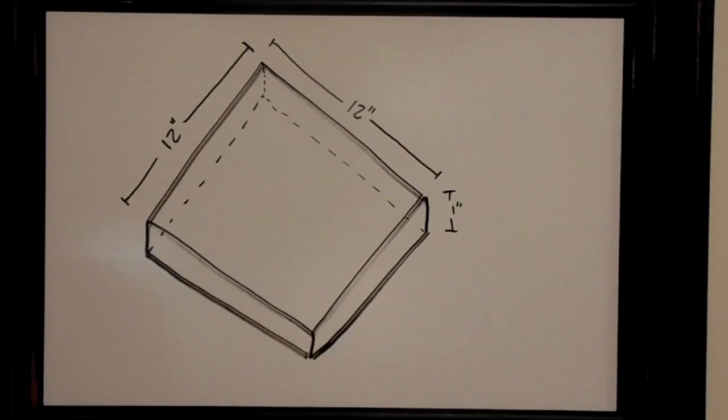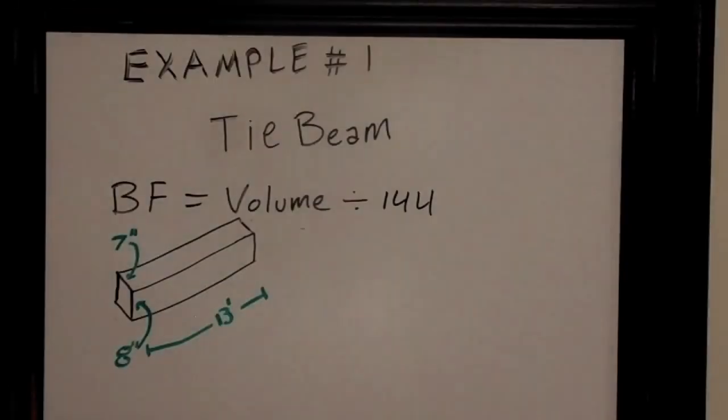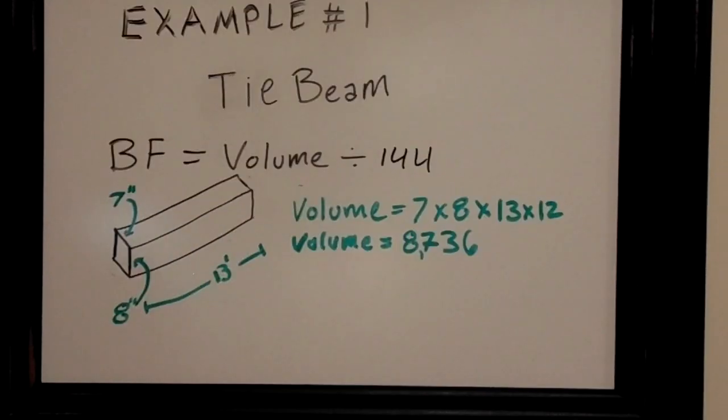Now I'm going to run through a few quick examples. The first example I'm going to do is a tie beam for my small timber frame. I have three tie beams, and each tie beam, the size of beam that I need to start with, is 7 inches wide, 8 inches tall, and 13 feet long. So first I'm going to figure out the volume of wood in cubic inches.